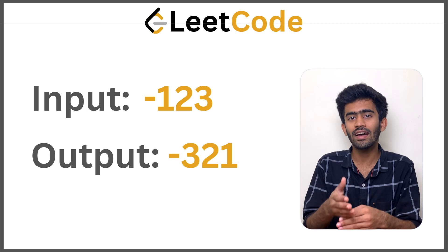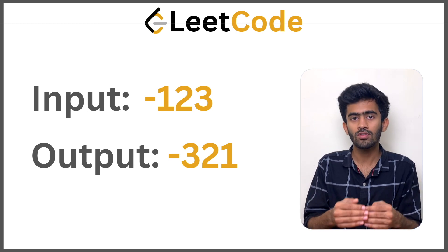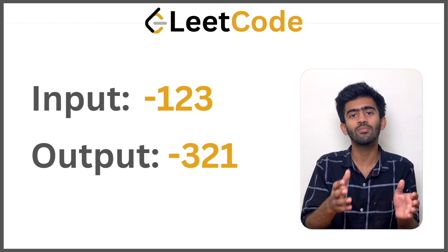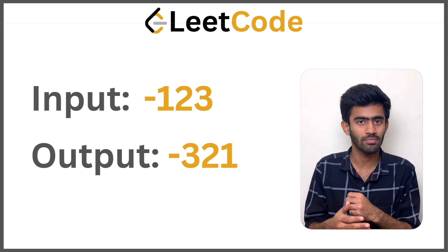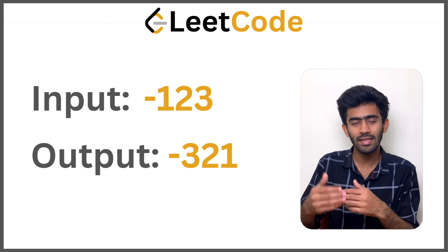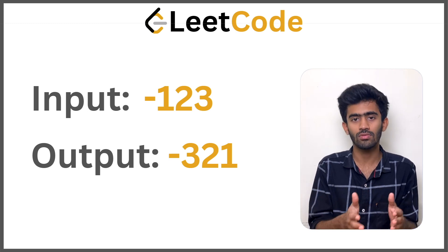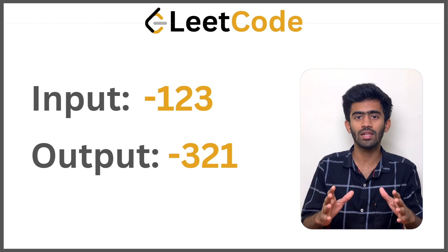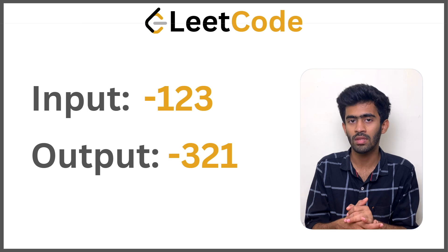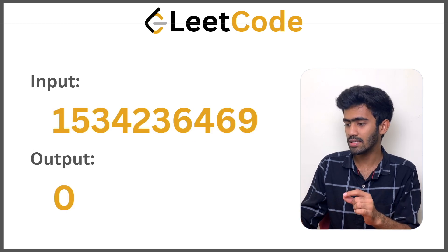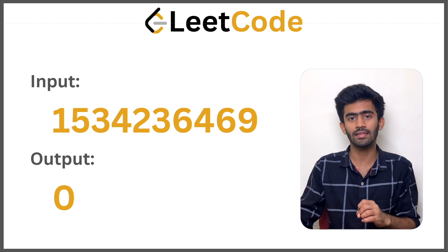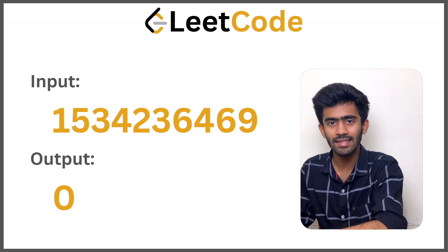Now we repeat the process — 12 modulo 10 gives us 2, which is the last digit of 12. Repeating gives us 3, 2, 1 respectively. This is the usual logic we use to reverse a number. We are just going to add a condition to check whether the given number exceeds the range of the integer. That is an extra condition, but it is essentially reversing a number.